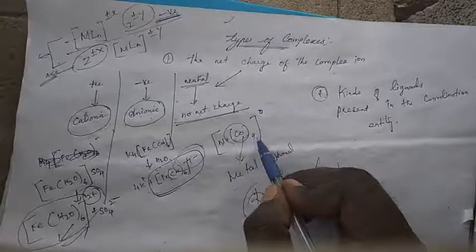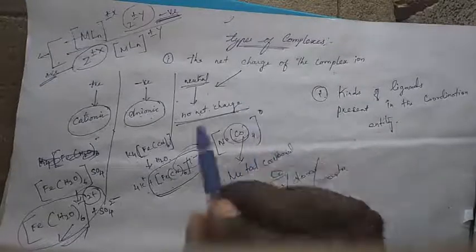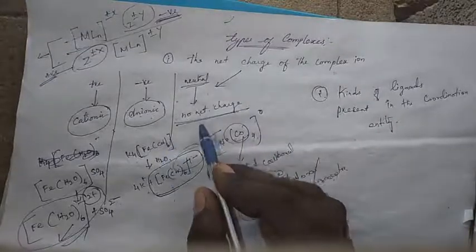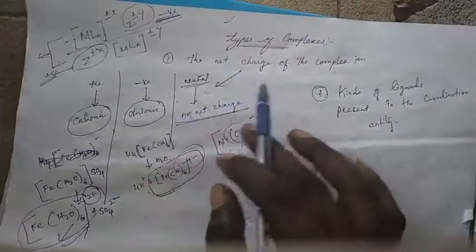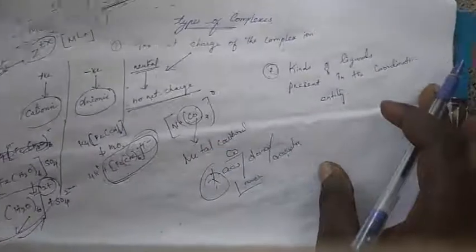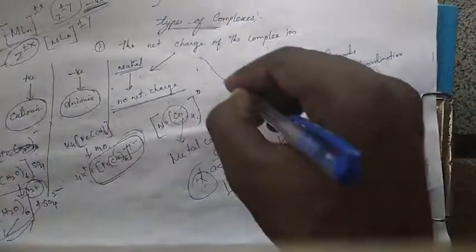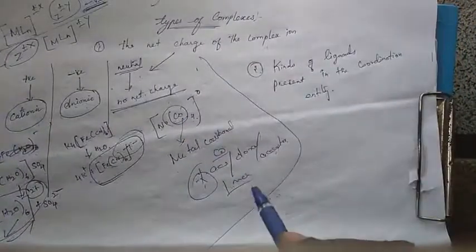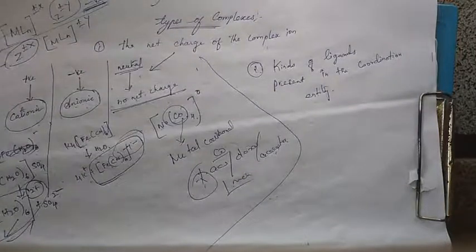Ni(CO)4 — charge is neutral, therefore no net charge, it is a neutral complex. Next, the second classification: kinds of ligands present in the coordination entity.